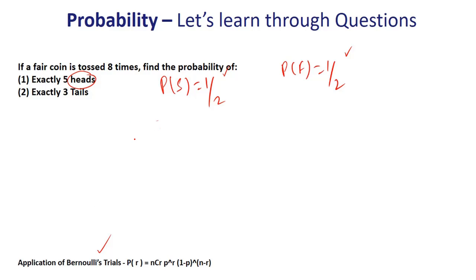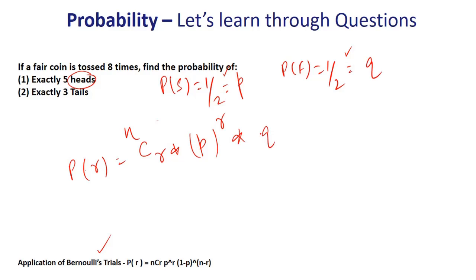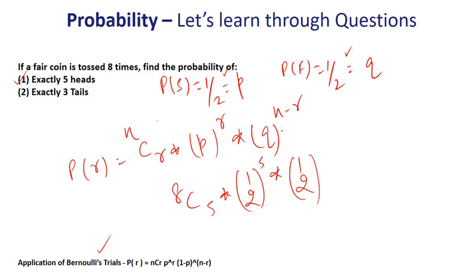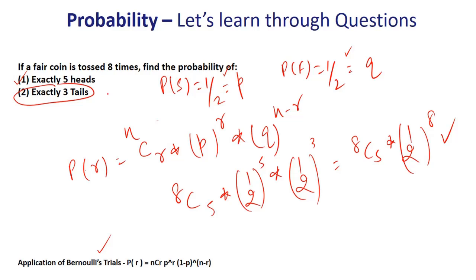When out of n trials you require success r number of times, the probability is given as: nCr × p^r × q^(n−r), where p is probability of success and q is probability of failure. For exactly five heads out of eight tosses: this becomes 8C5 × (1/2)^5 × (1/2)^3, which equals 8C5 × (1/2)^8. You can take the second question as an exercise, solve it, and put the answer in the chat. I hope it was a fruitful exercise for all of you.